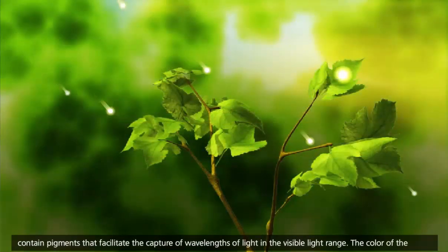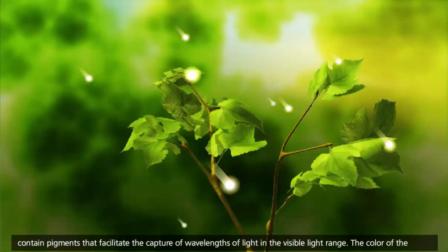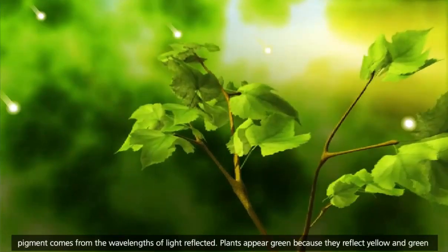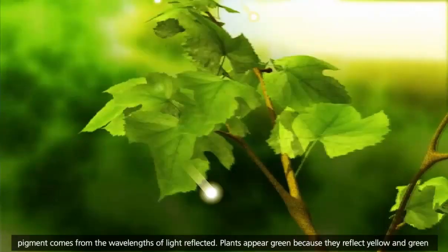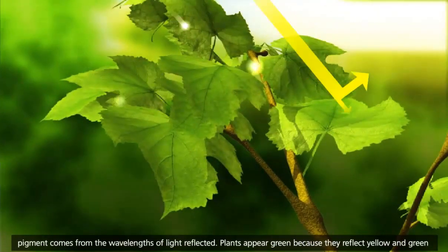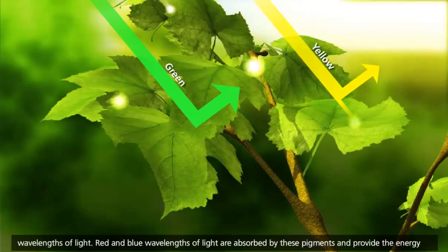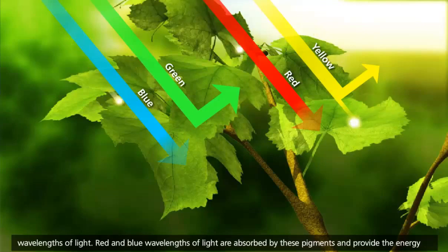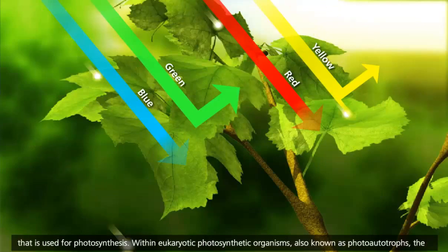Photosynthetic organisms contain pigments that facilitate the capture of wavelengths of light in the visible light range. The color of the pigment comes from the wavelengths of light reflected. Plants appear green because they reflect yellow and green wavelengths of light. Red and blue wavelengths of light are absorbed by these pigments and provide the energy that is used for photosynthesis.